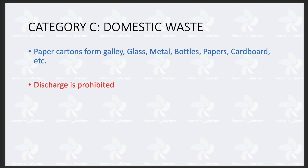Everything under Category C — full domestic waste — discharge into sea is prohibited. Generally what happens is paper and paper-related things can be burnt in the incinerator. But glass and metal — these things are stored in their dedicated cans and that is landed ashore.